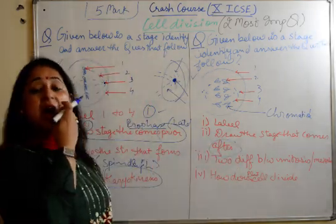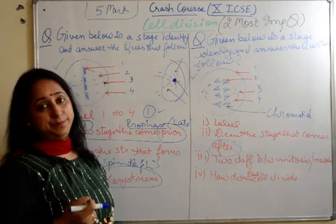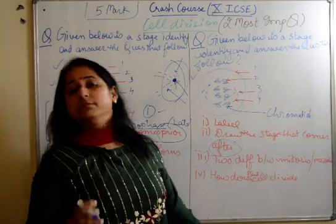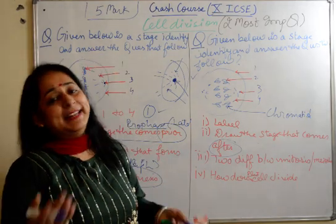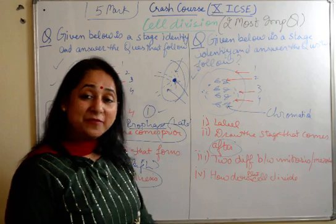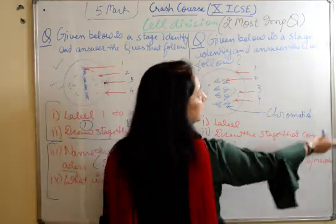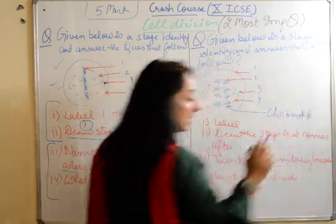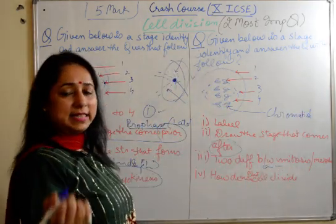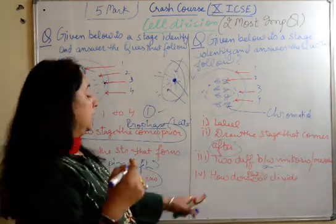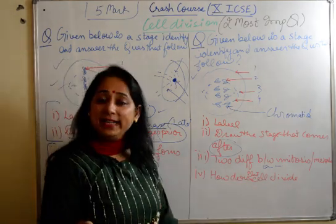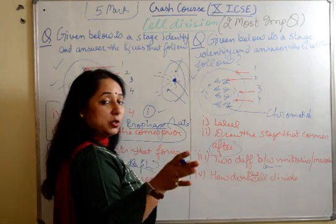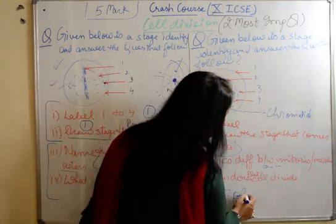Then draw the stage that comes after this. After this, you have to draw telophase. Two differences between mitosis and meiosis - any two. If they are specified, like for example, two differences between mitosis and meiosis on the basis of number of daughter cells formed, you have to tell how many daughter cells are formed. How does the plant cell divide?